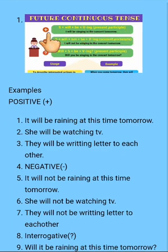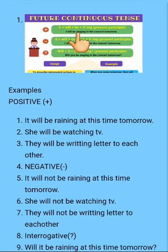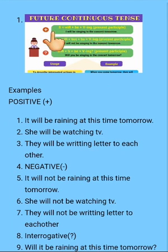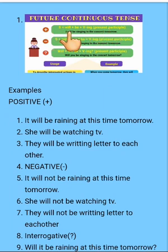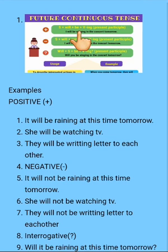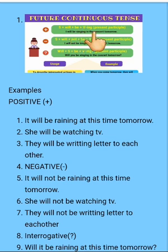So here are rules. In the positive sentences, subject plus will plus be plus verb first form plus ing then object. Positive sentences de which will a jaega subject de naal, plus be use karaange, then verb di first form de naal ing a jaoga, then object.